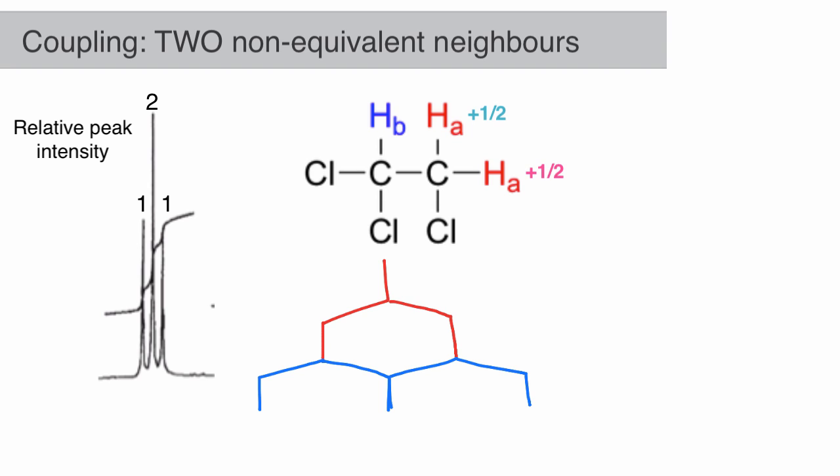If both HA atoms have spin +1/2, HB will have the highest resonance frequency.